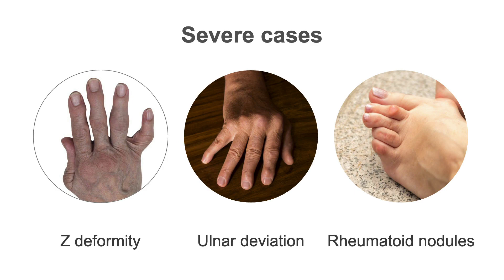Sometimes you may find rheumatoid nodules on the dorsum of the hands or extensor surfaces elsewhere. These are superficial nodules, typically small, that can be located under the skin, over the tendons, bursa, and bones.